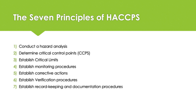Principle six: establish procedures for verification to confirm that the HACCP system is working effectively. Principle seven: establish documentation concerning all procedures and records appropriate to these principles and their application.